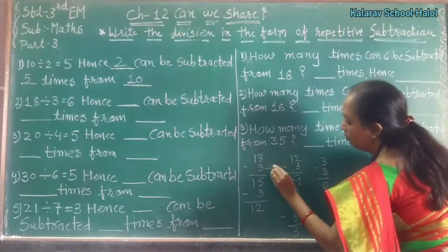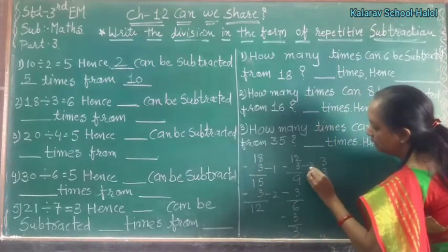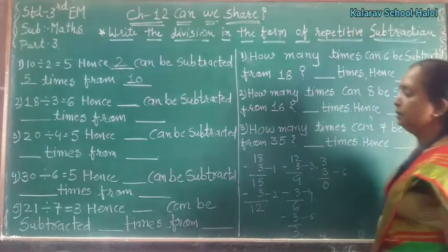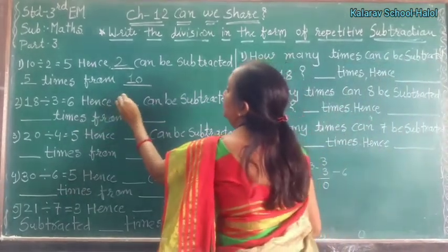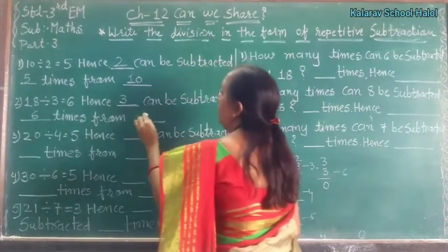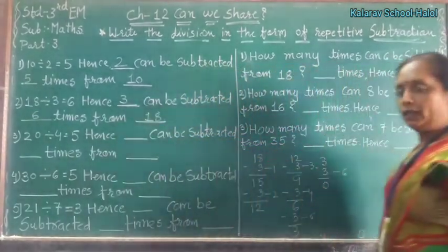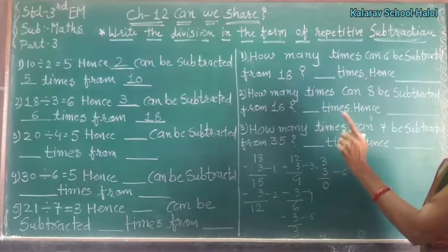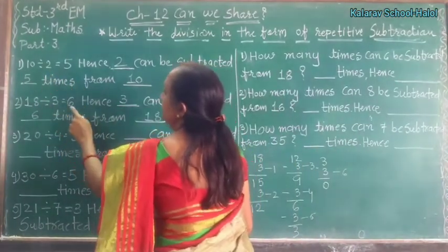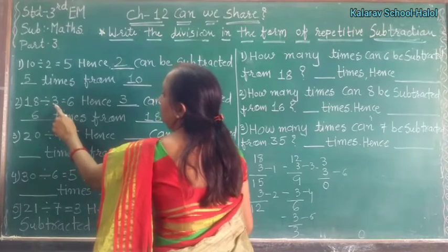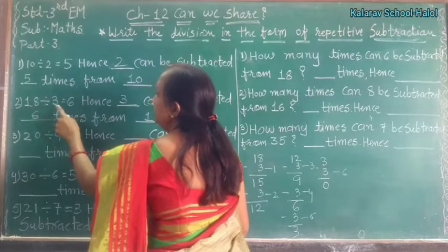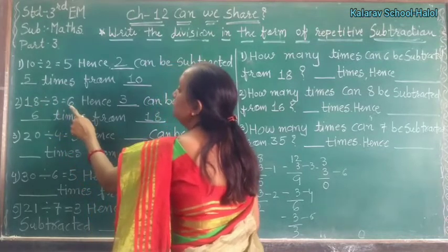How many times subtraction? 1, 2, 3, 4, 5, and 6 times. Hence, 3 can be subtracted 6 times from 18. If you see what happens: 3 times 6 is 18. The 3 times table: 3 sixes are 18, so 3 is 6 times in 18.